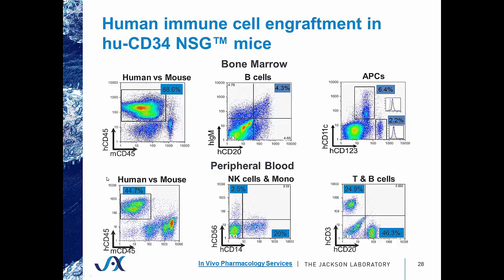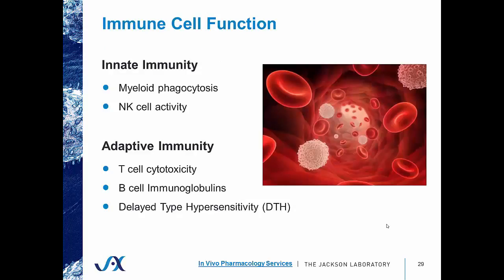In the peripheral blood, we again see high levels of human immune cell engraftment, including natural killer cells, monocytes, mature T cells, and CD20-positive B cells. Immune cell function has been demonstrated in these models, including functional innate immunity — myeloid phagocytosis and natural killer cell activity — as well as adaptive immunity, including CD8-positive T cell cytotoxicity, delayed-type hypersensitivity, and B cell immunoglobulins. I will note that antibody production has been a limitation, and not much IgG production has been demonstrated, but that is an ongoing research effort.